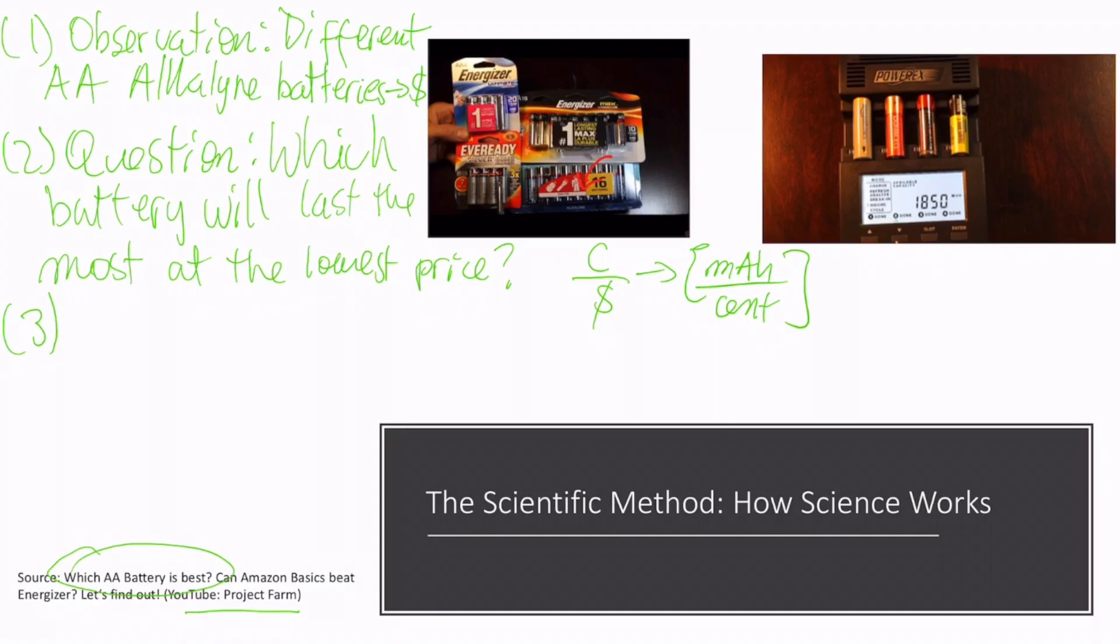The third step is to come up with a hypothesis. A hypothesis is basically a logical idea that will help you answer your question. In this case, I personally think that the most expensive battery will be the one that lasts the longest, so the most expensive one will be the best.